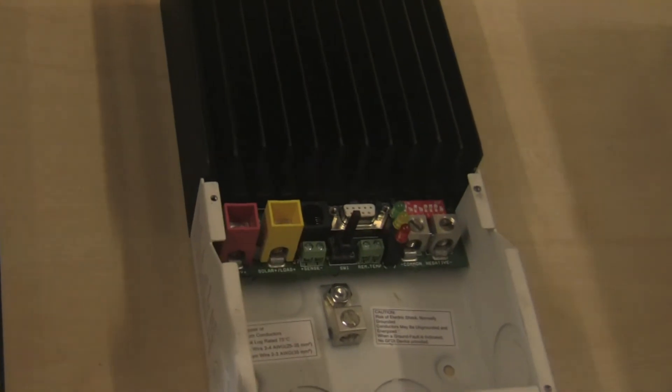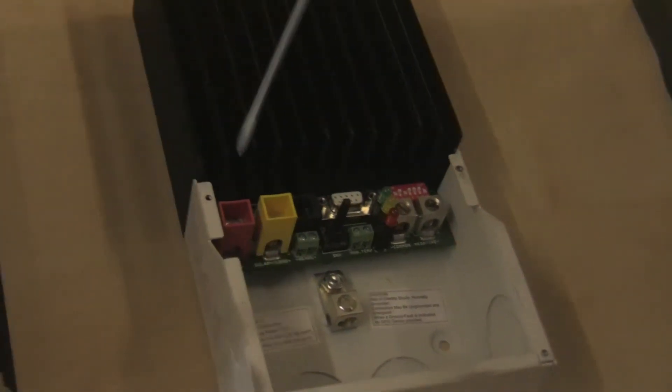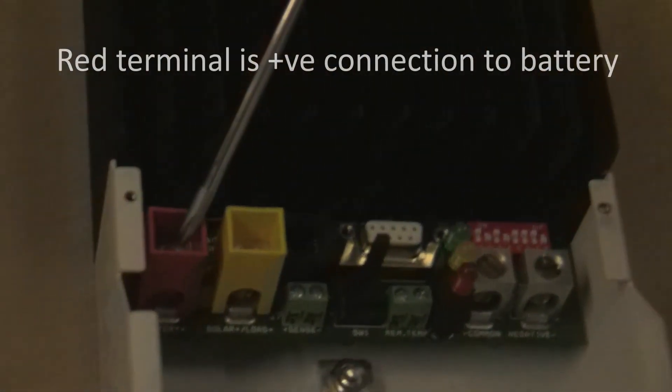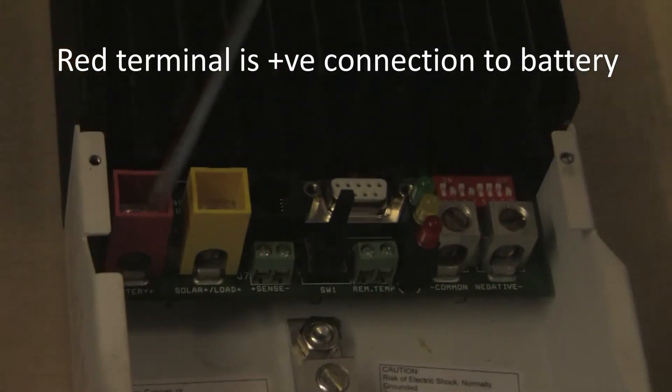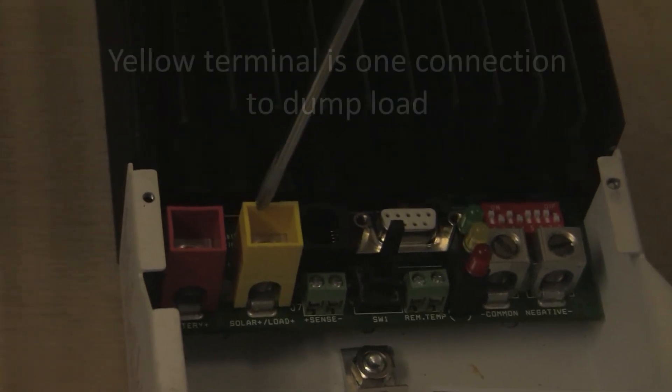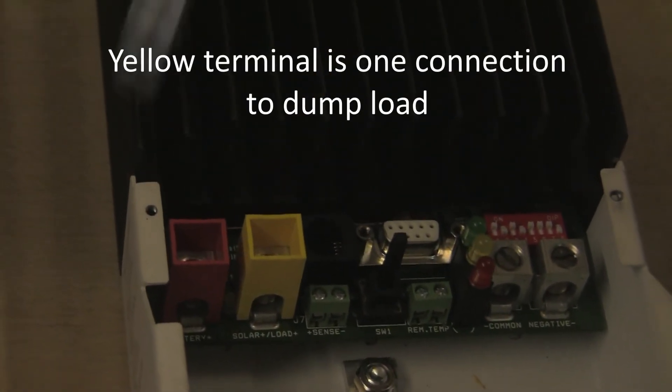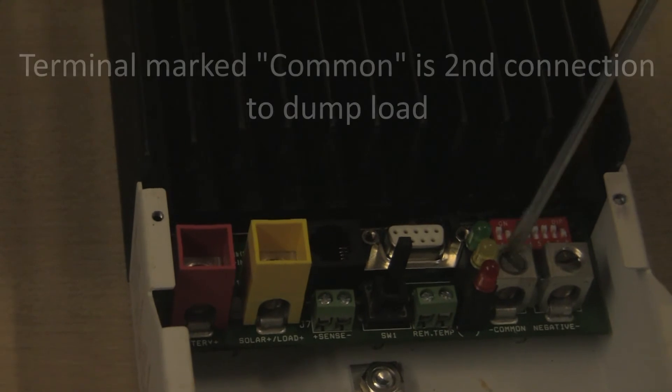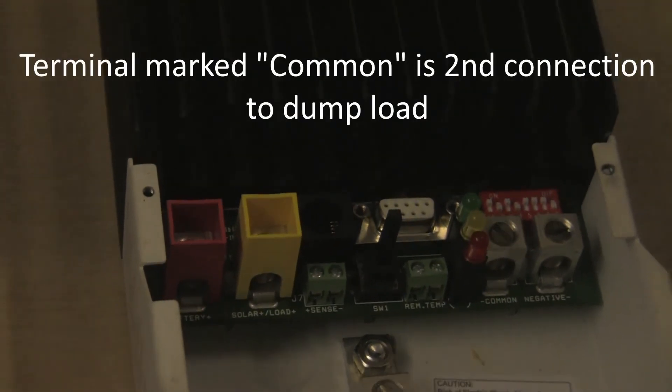Now there are a number of terminals in the tri-star. We've got a connection to the battery, and then the other side is the negative connection to the battery. And then the yellow terminal is one of the connections to the dump load, and then the terminal marked common is the second connection to the dump load.